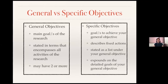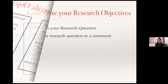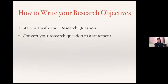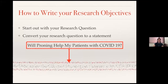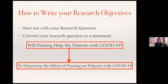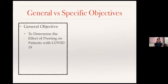So how do you write out your specific objectives? You actually expound on the details of the goals of your general objective. You always start out with your research question, and then you convert that research question to a statement. For example, 'Will proning help my patient with COVID-19?' You started searching for literature and found it's not very clear yet, so you want to write a study on this. You convert your research question into a statement: 'To determine the effect of proning on patients with COVID-19.' So the general objective is to determine the effect of proning on patients with COVID-19.